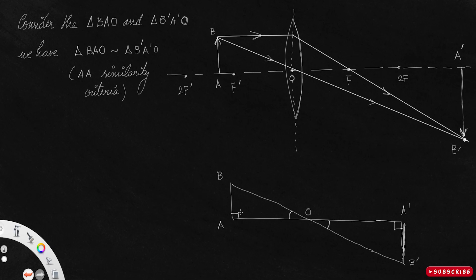We know that sides opposite to equal angles are in the same proportion. Since these two angles are equal, the third angle is automatically equal as well. The side opposite to one angle is AB, and the side opposite to its corresponding angle is A'B'. So AB divided by A'B' equals AO divided by A'O. Let me now mark the image distance, object distance, and related values.